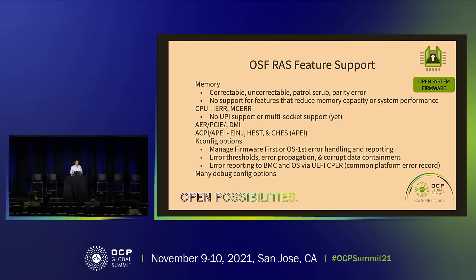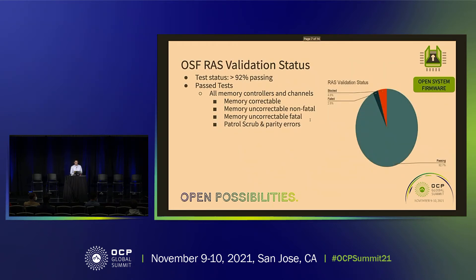Those are all the coreboot config options, and we have quite some debug config options as well. On the Delta Lake, this is our validation status — over 92% passed. Those are the status from March when we did the PVT exit.